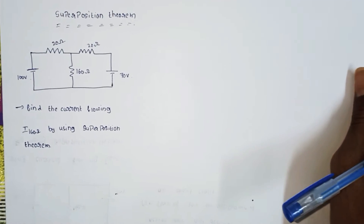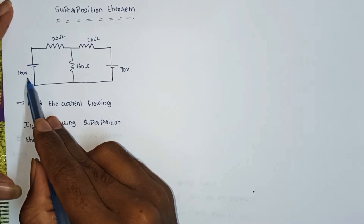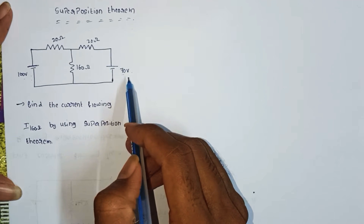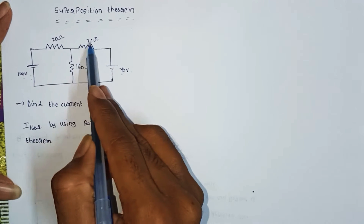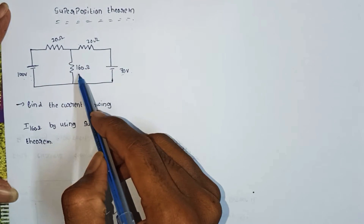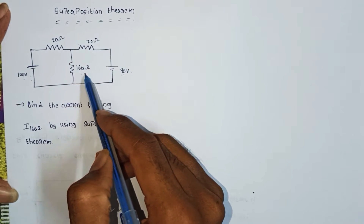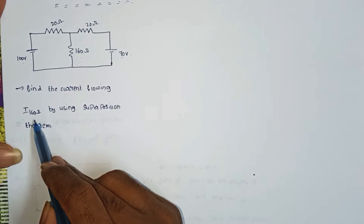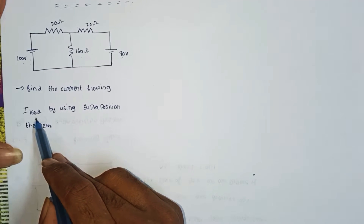Hi friends, welcome to Ganesh Tarita's YouTube channel. Today in this video I will discuss the superposition theorem. Here we can see the circuit contains 100 volts and 70 volts, with 20 ohms, 20 ohms resistance and 160 ohms resistance. We will find the current flowing through the 160 ohm resistance by using superposition theorem.